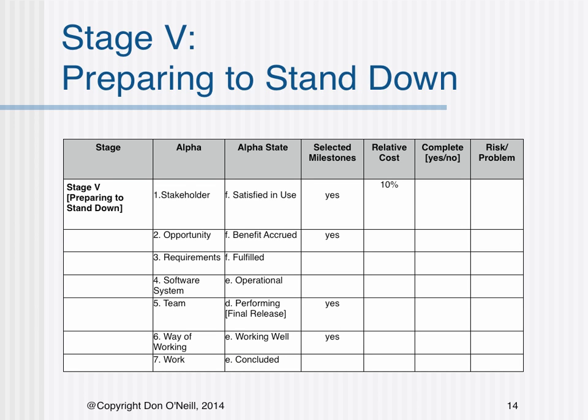Stage 5 entails obtaining stakeholder satisfaction in use. The opportunity benefit is accrued. Requirements are fulfilled. The team has performed the final release. The way of working is working well. And the work is concluded. The critical selected milestones revolve around stakeholder satisfaction in use, the team having performed the final release, and work concluded.